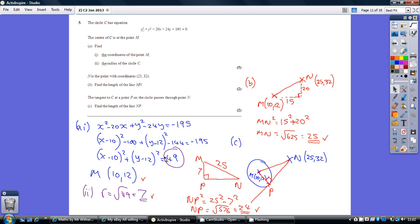And part B, this bit here is the radius squared. So, for part 2, we know the radius is the square root of 49, which is 7.